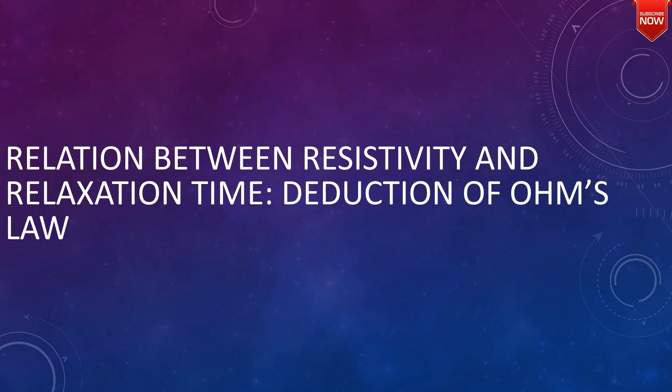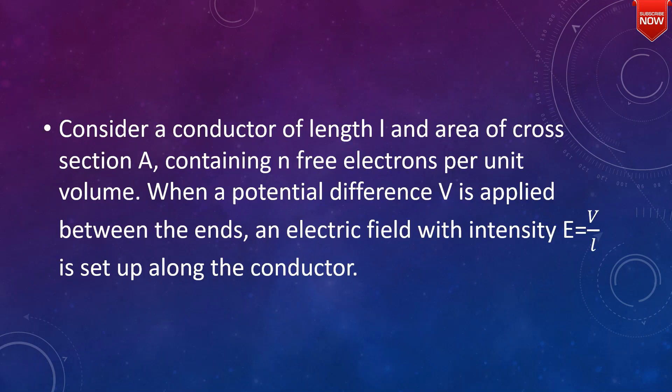Relation between resistivity and relaxation time — deduction of Ohm's law. Consider a conductor of length l and area of cross-section a, containing n free electrons per unit volume. When a potential difference V is applied between the ends, an electric field of intensity E = V/l is set up along the conductor.